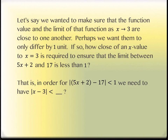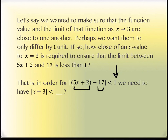We want to make sure the function value and the limit are close to one another — perhaps differing by only 1 unit. So how close must x be to 3 to ensure the absolute value of (5x + 2) minus 17 is less than 1? We use absolute value because we care about distance regardless of direction — 1 ahead or 1 below of 17.